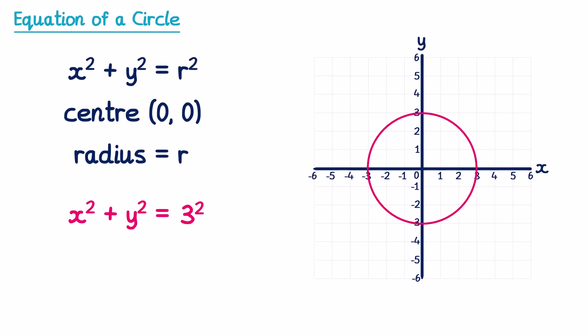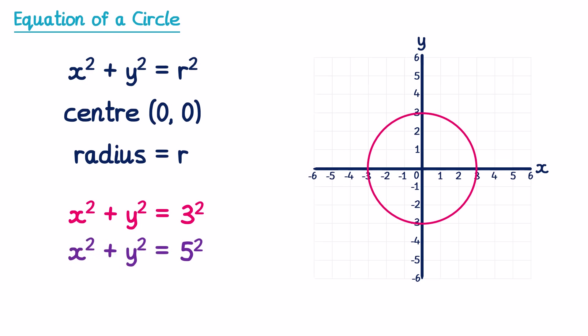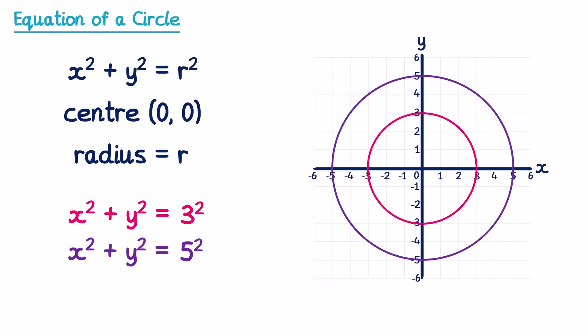Notice how the graph crosses the y and x axes at positive three and also negative three. And if we had x² + y² = 5², this would be exactly the same idea but the radius would now be equal to five. So we draw a circle with centre at the origin and a radius of five, something that looks like this.